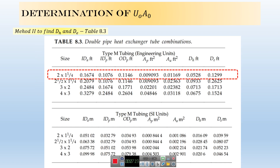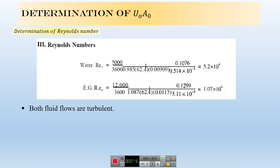The next step is to find the heat transfer coefficient. To find it, you need the Nusselt number, which depends on the Reynolds number and Prandtl number. To find the Reynolds number for water, use IDP. For ethylene glycol in the annulus, use the equivalent diameter D_e, because you will use this Reynolds number to find the Nusselt number.